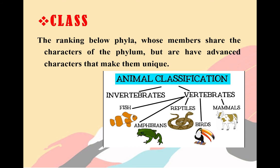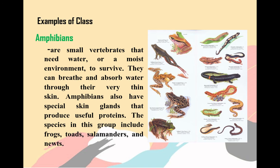The next classification of Animal Kingdom is class. It is the ranking below phyla, whose members share the characters of the phylum but have advanced characters that make them unique. Under the class, we classify animals as either vertebrates or invertebrates. Number one, amphibians are small vertebrates that need water or a moist environment to survive. They can breathe and absorb water through their very thin skin. Amphibians also have special skin glands to produce useful proteins. The species in this group include frogs, toads, salamanders, and newts.